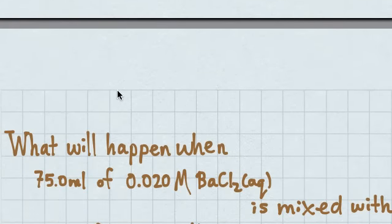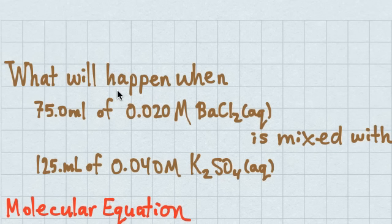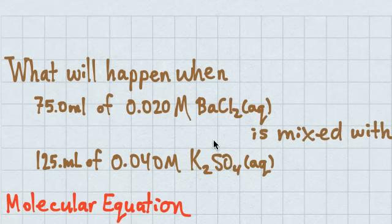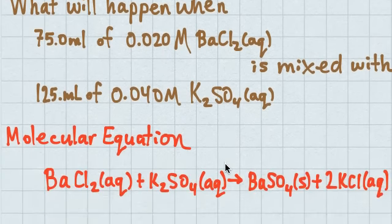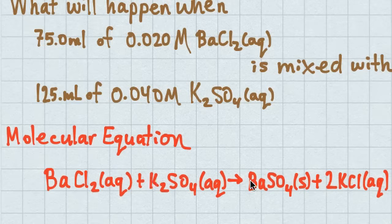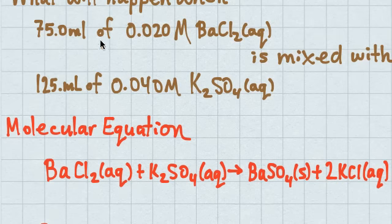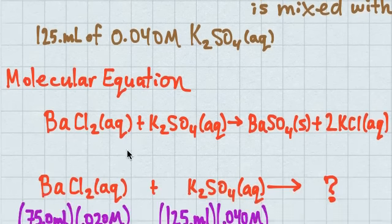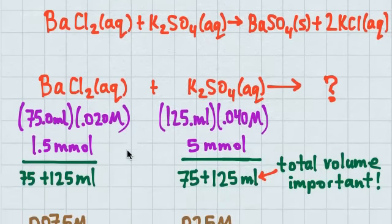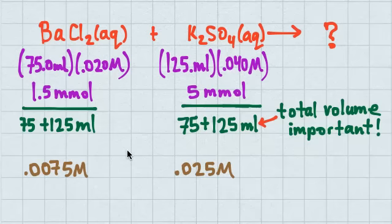Another example: will I see precipitation if I mix 75 mL of 0.02 M barium chloride with 125 mL of 0.04 M potassium sulfate? Barium chloride dissolves well in water, and so does potassium sulfate — but barium sulfate doesn't dissolve in water. Writing the molecular equation and thinking about stoichiometry, one of these reacts with one of these to give barium sulfate. Using volume × molarity, the total volume is 75 + 125 = 200 mL, and this goes back to aqueous stoichiometry.